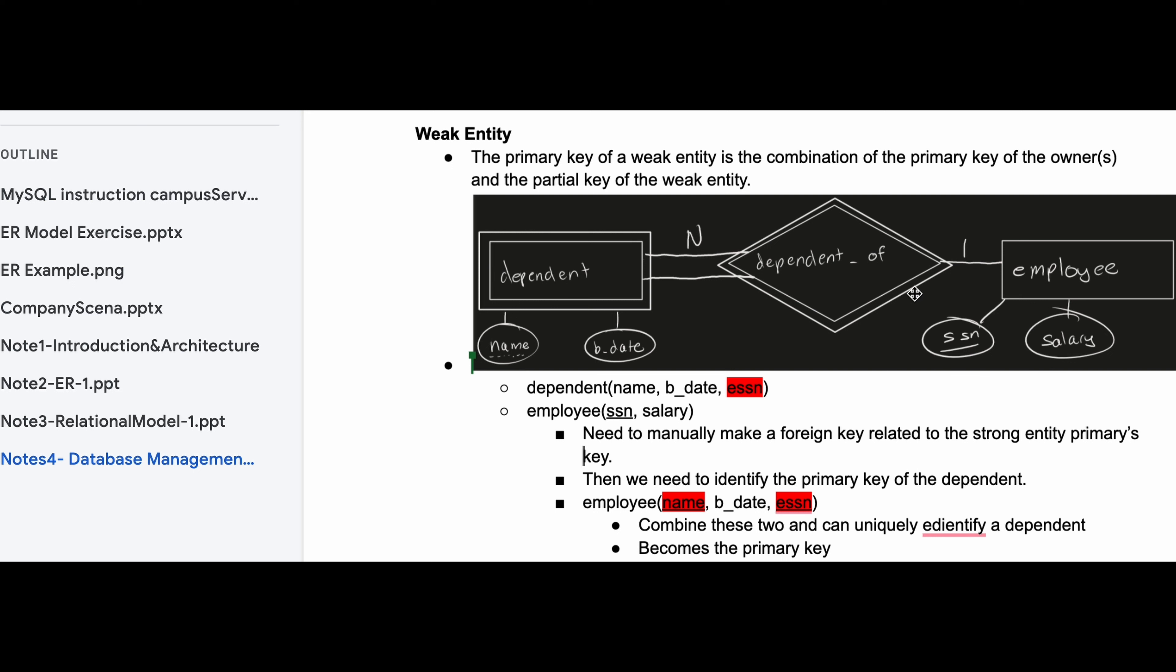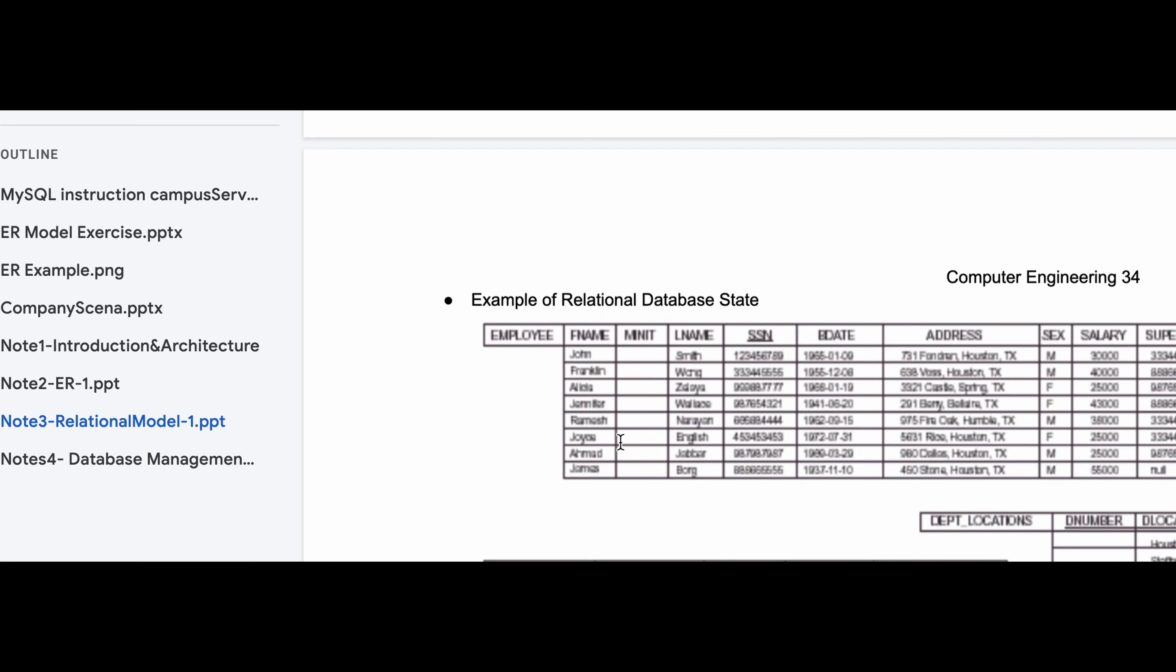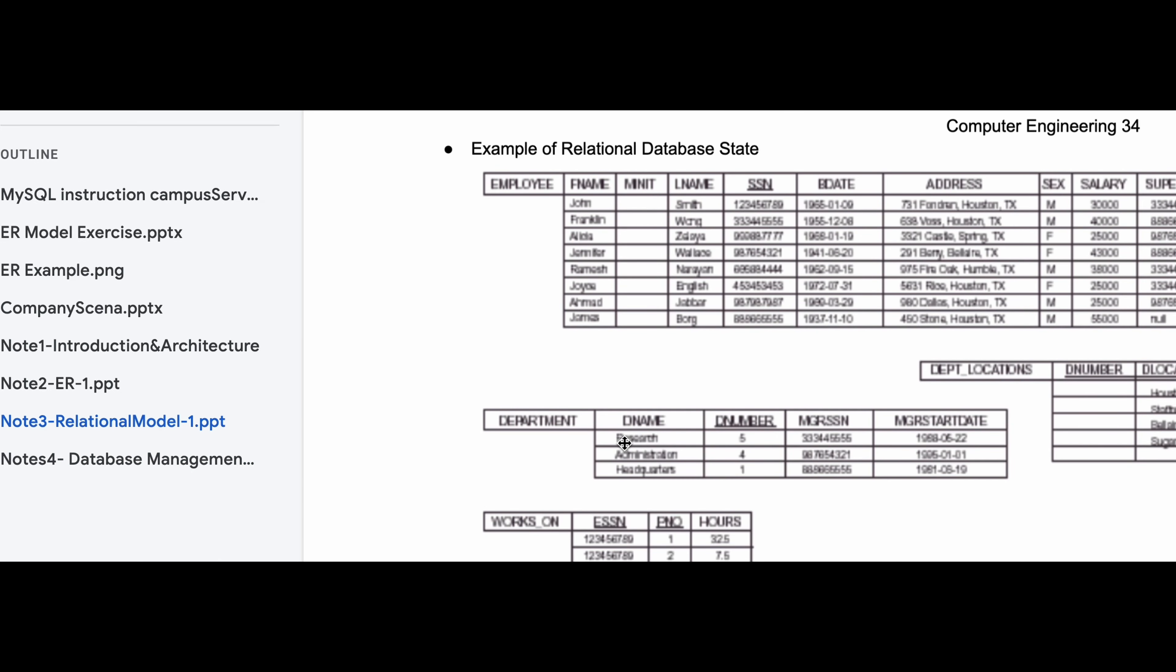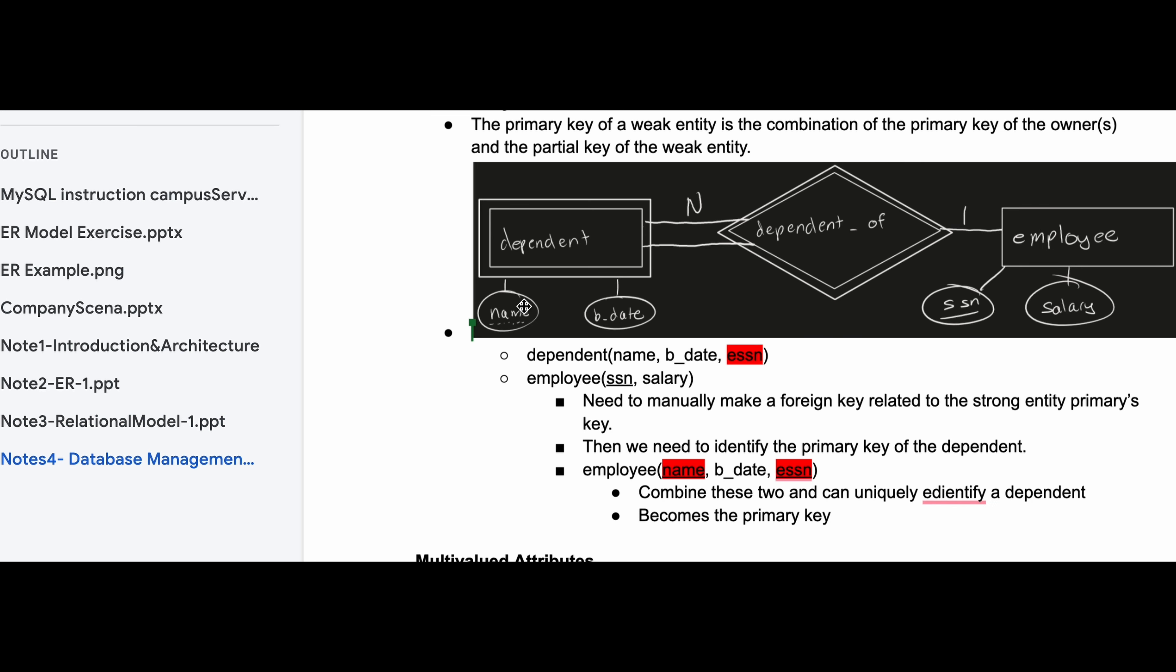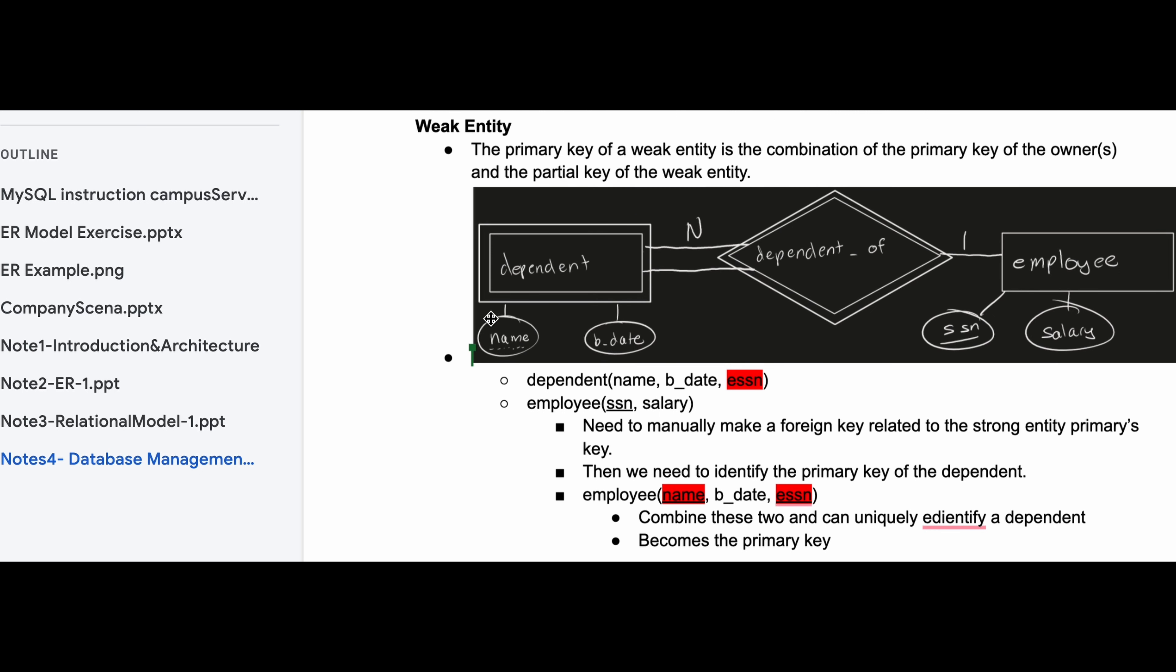So if we were to make our little chart from this like we have had in a previous example, something like this, and we wanted to relate them, we would just draw an arrow from one to the other and this one's going to be from the employee SSN to the dependent. So that is how that would look.